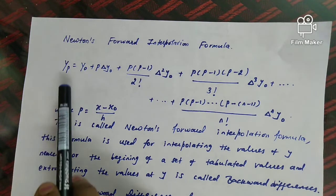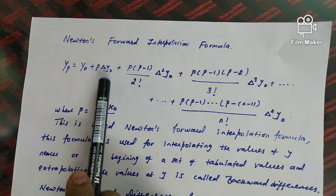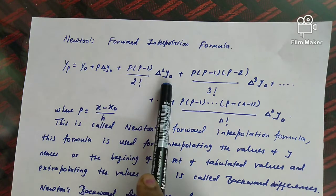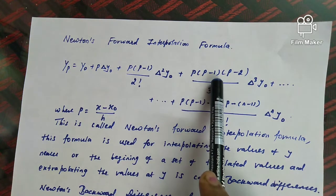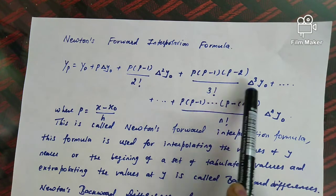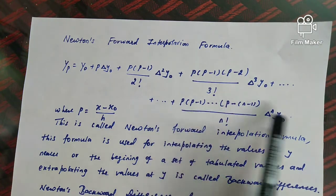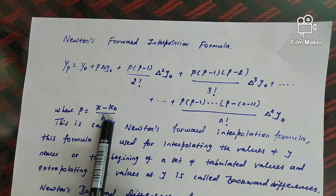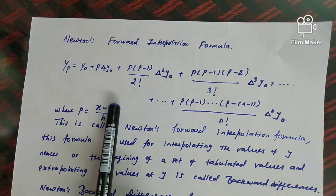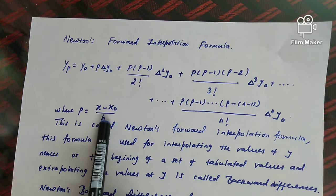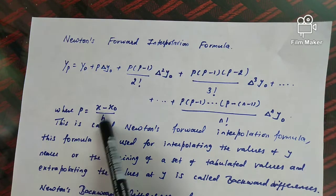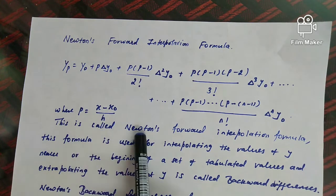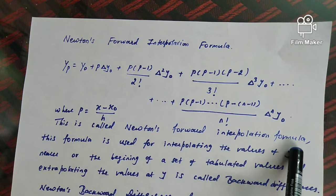The first formula is yp equal to y naught plus p·Δy naught plus p(p−1)/2! · Δ²y naught plus p(p−1)(p−2)/3! · Δ³y naught, and so on up to the nth term, where p = (x − x naught)/h. Here x naught is the beginning value of the x data, and h is the interval between the x data values.